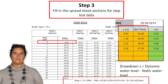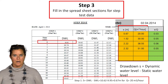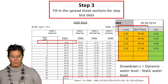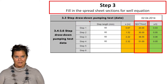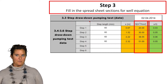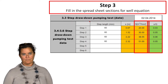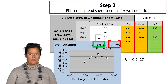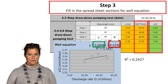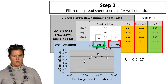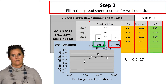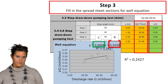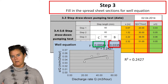We will do exactly the same for all four steps, compiling the spreadsheet so that the specific drawdown s/Q will automatically appear in the fourth column. As soon as we have the pumping rate and the specific drawdown, the well equation will be automatically plotted in a graph. You can see that the correlation factor r² is in this case 0.2427. If the correlation factor is lower than 0.75, we have to consider the data as poor quality and the well equation cannot be used directly.